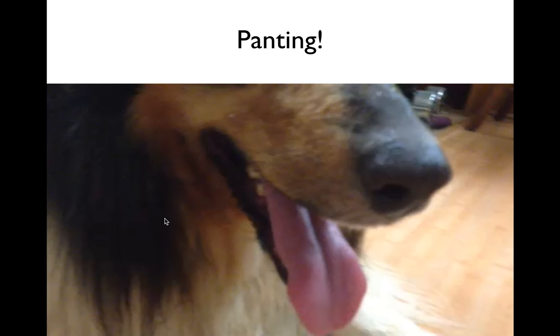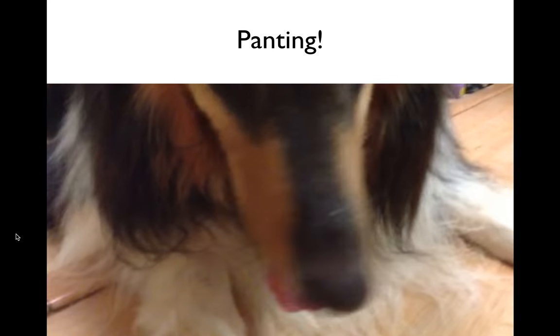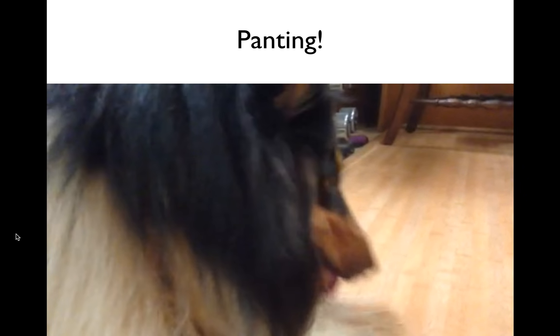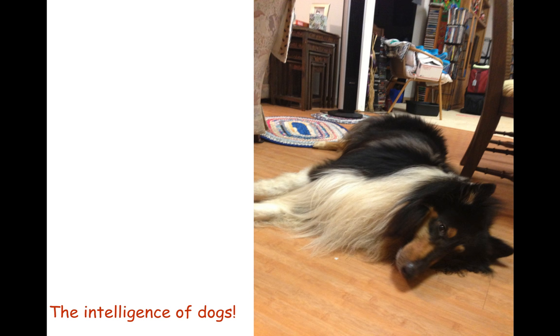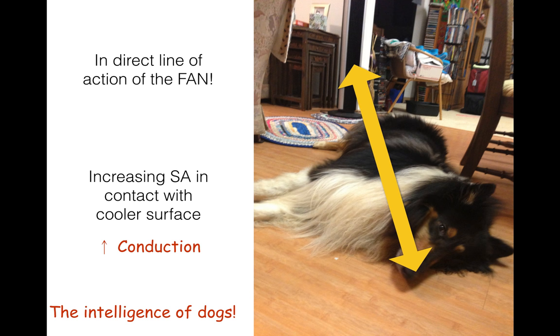And then of course there's panting, and here is Tim Tam being a very amazing example of panting. He's wondering why I'm filming him, but he's a good sport. Dogs are really brilliant. Have you noticed that when they're hot, they just really increase their surface area when they're in contact with a cooler surface? Of course they're increasing their rate of conduction. And he is, if you notice, perfectly in line with the direction of the fan. He is increasing his rate of convection. I hope that you can now go out there and observe all of these amazing animals and their wonderful little behaviors to deal with the hot Septembers that we have in Hawaii. Okay, have fun. Bye bye.